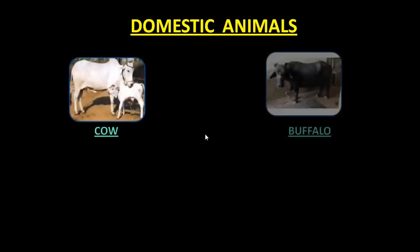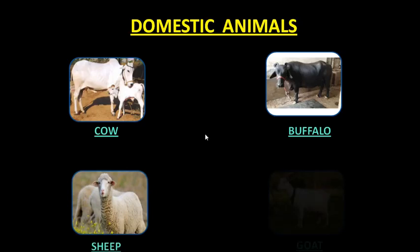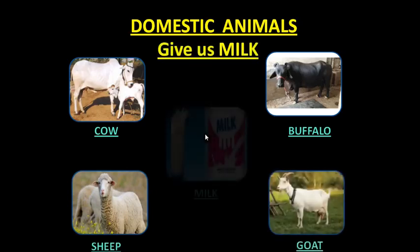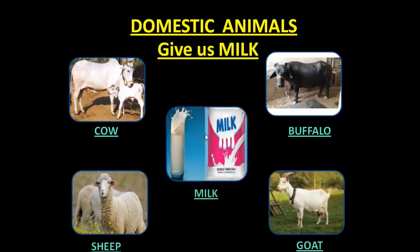Domestic animals are helpful to us in many ways. For example, domestic animals like cow, buffalo, sheep, and goat give us milk. We get milk from domestic animals like cow, buffalo, sheep, and goat.